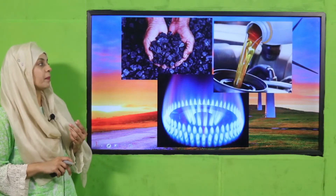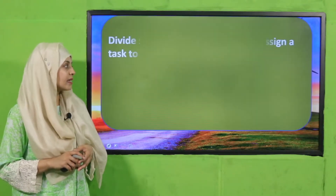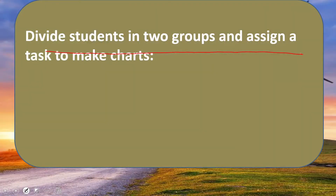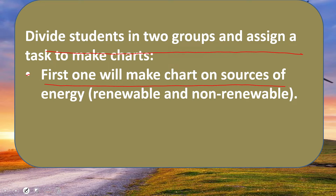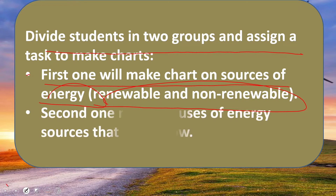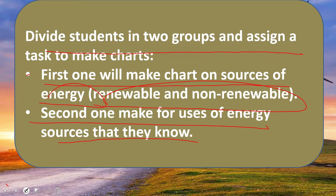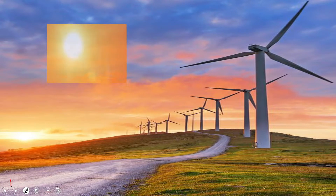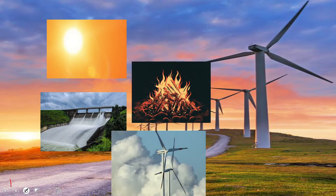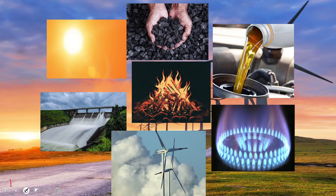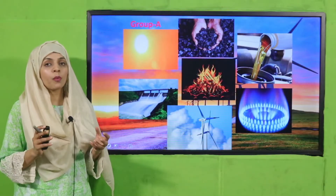Now is the time for activity. Divide the students into two groups and assign a task to make charts. Group A will make a chart on sources of energy — renewable and non-renewable. You already know about these, so I will help you with pictures. This chart has different pictures to separate renewable and non-renewable resources. Pause the video and separate out the renewable and non-renewable resources from the pictures.